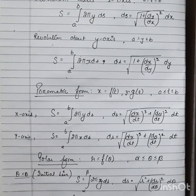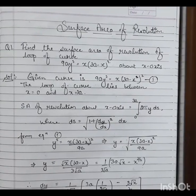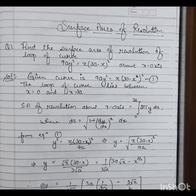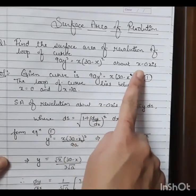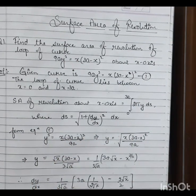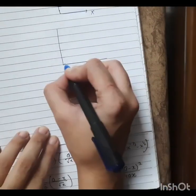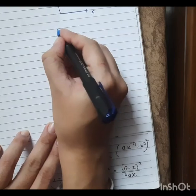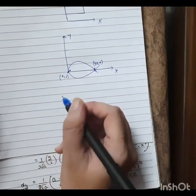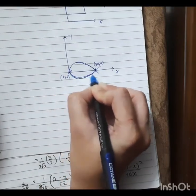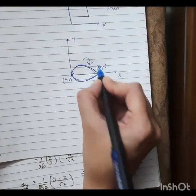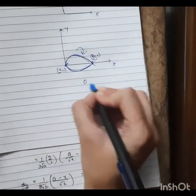Let's look at the first example: find the surface area of revolution of the loop of the curve 9ay² = x(3a − x)² about the x-axis. The given curve is 9ay² = x(3a − x)². If you draw this curve, it has a loop from the origin (0,0) to the point (3a, 0) on the x-axis. We have to revolve this loop — that closed path — around the x-axis, and find the area of the new solid formed. The limits are 0 to 3a.